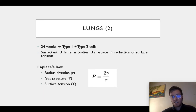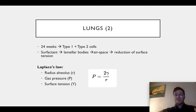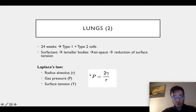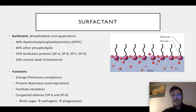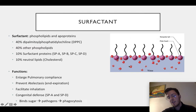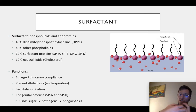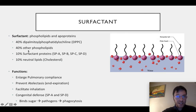This is described by the Laplace law, where P stands for gas pressure, gamma is the surface tension, and r is the radius of your alveoli. When you inhale and your alveoli get bigger, the radius gets bigger, the fraction gets smaller, and therefore the pressure in the lung gets lower. The other way around is also true: when you exhale, the radius gets smaller and therefore the pressure gets bigger. Surfactant is made by phospholipids and apoproteins. Those phospholipids are very important because they can at one end bind water and at the other end air, making up 40% of your surfactant.